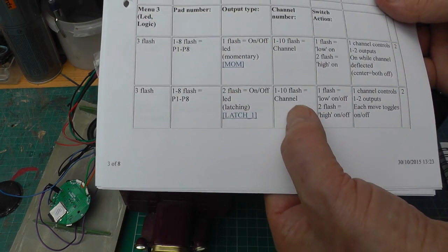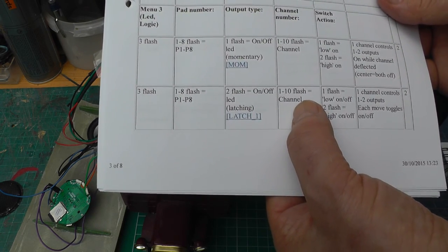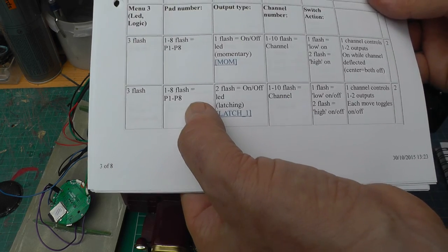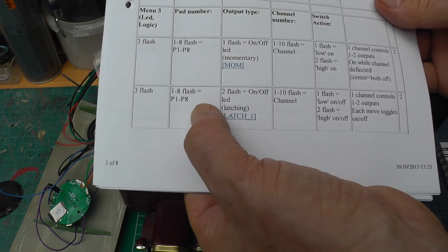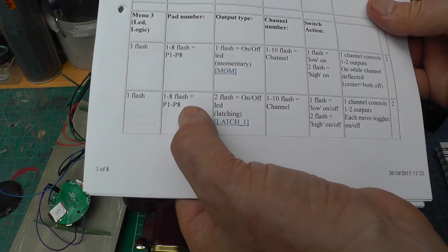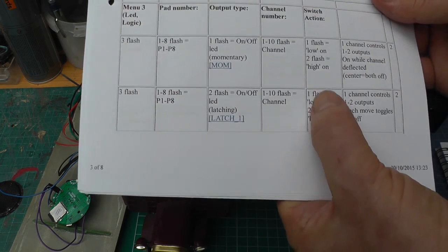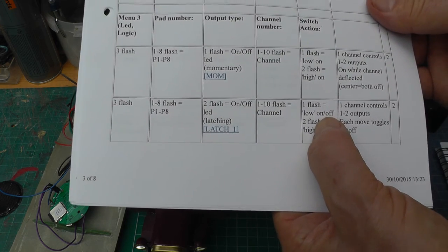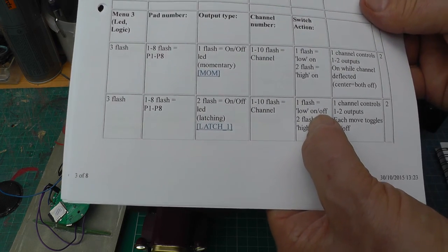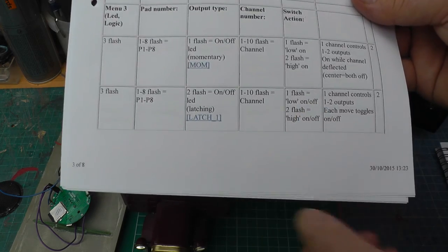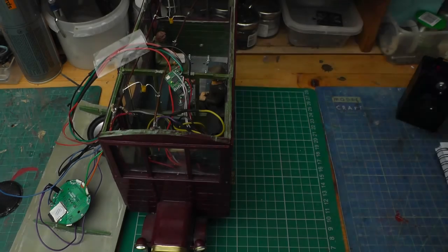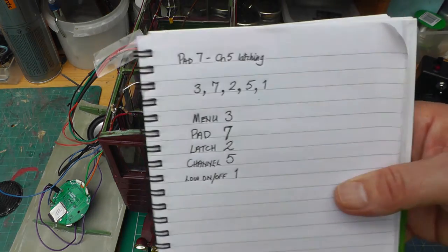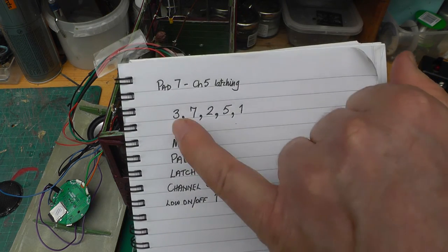Because the bind button is on channel 5, I need it on channel 5. The output from the receiver is on pad 7 and I want it to come on and off when the bind button is pressed. So that sends the channel low, sends it down to 0V.